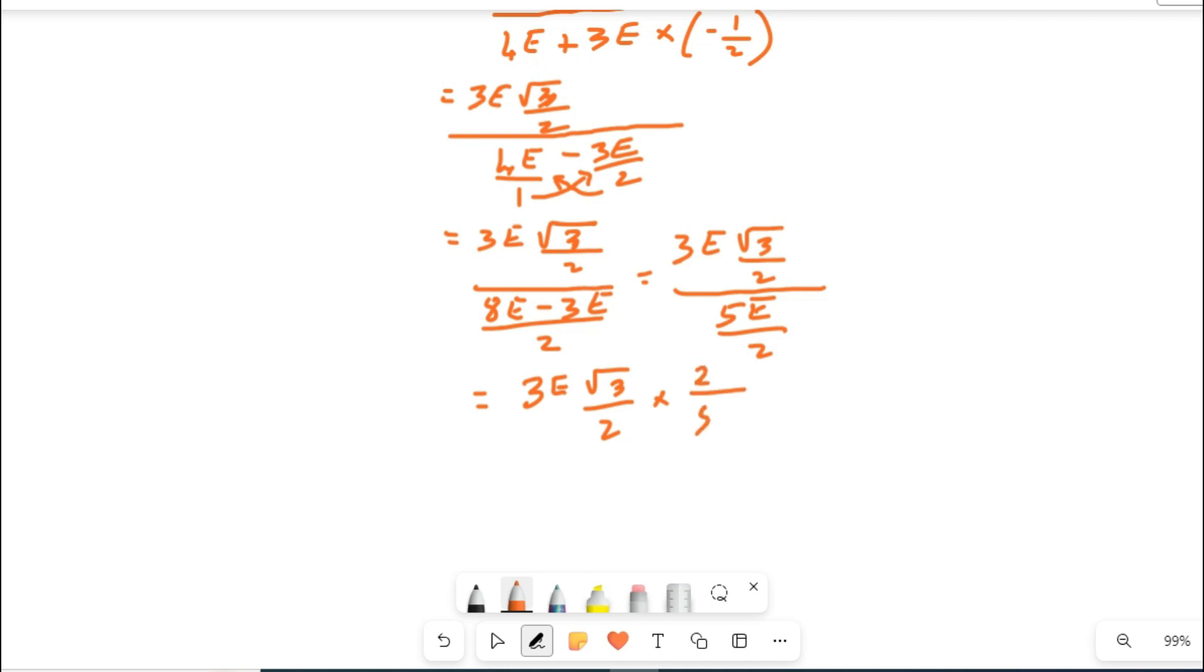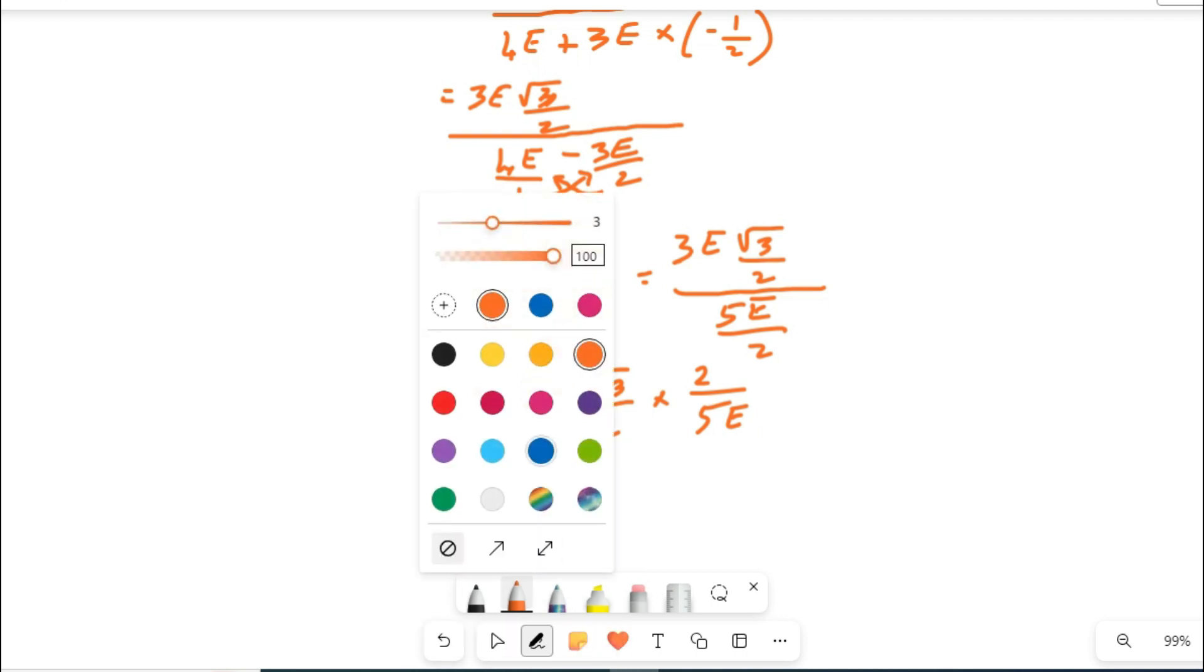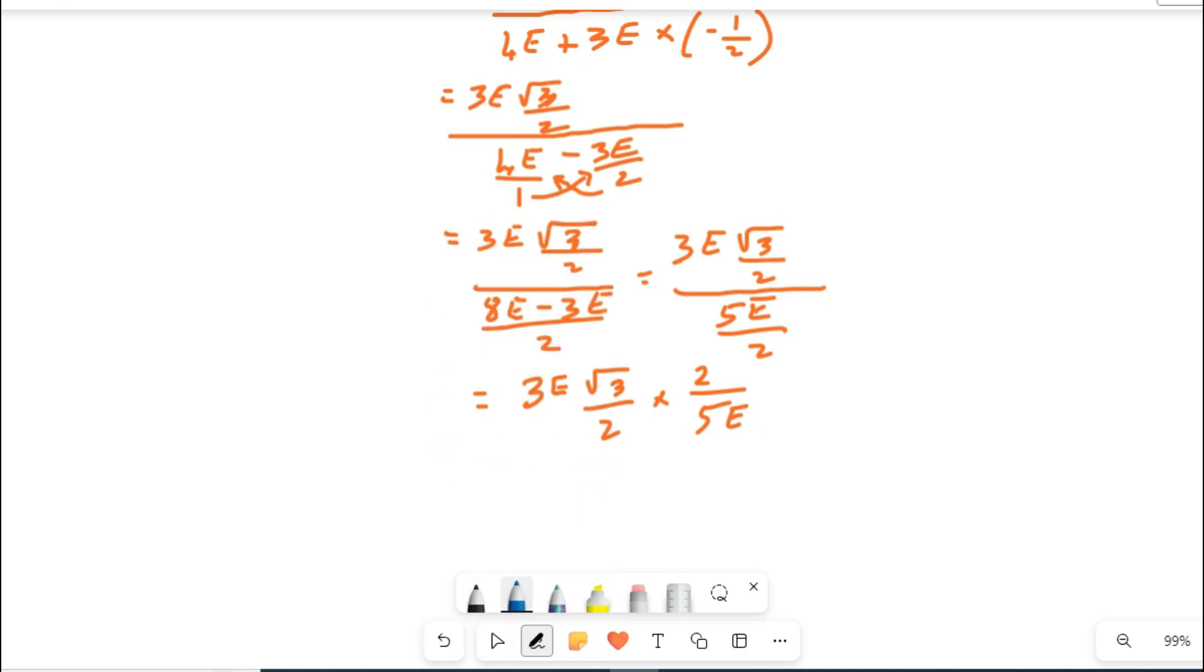Reciprocal multiplication doing now. This is the time to cancel whatever is repeating on numerator and denominator. Let me change the color. 2 and 2 cancel, E and E also canceling.